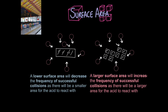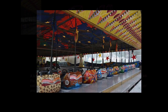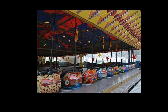By increasing the surface area, we're basically chopping up or powdering a solid into smaller parts. A low surface area — magnesium as one solid lump — versus cut into smaller parts with higher surface area. A lower surface area will decrease the frequency of successful collisions as there will be a smaller area for the acid to react with, whereas a larger surface area will increase the frequency of successful collisions as there will be a larger area for the acid to react with. It's a bit like taking one large dodgem car and replacing it with four smaller ones that add up to the same size — you'd expect them to collide more frequently.